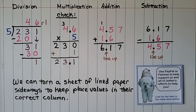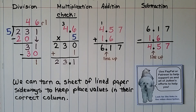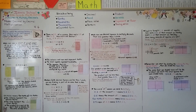Remember that we can turn a lined sheet of paper sideways to keep place values in their correct column. You can use PayPal or Patreon to help support this channel — there are links in the video description. Our next lesson, 4.7, we're going to multiply decimals with place value and with estimation. I hope I'll see you there.